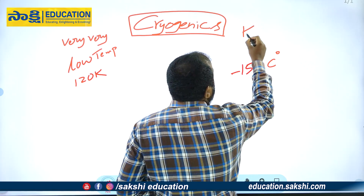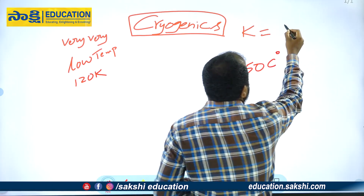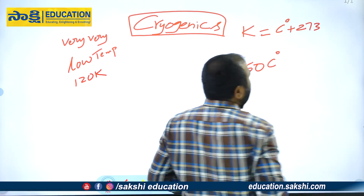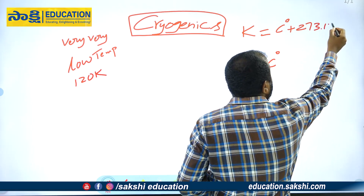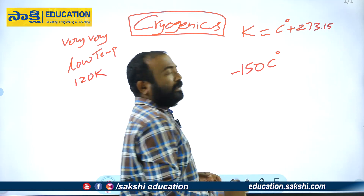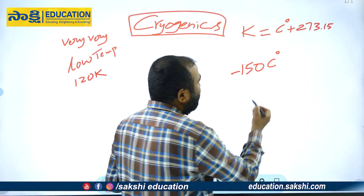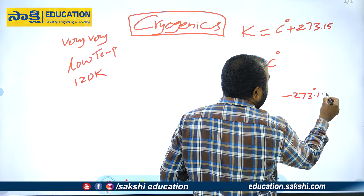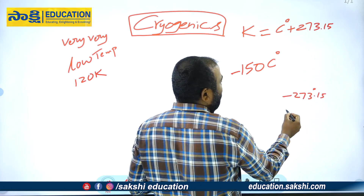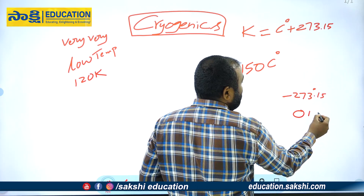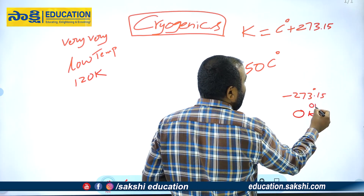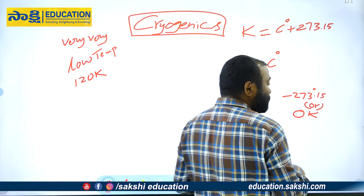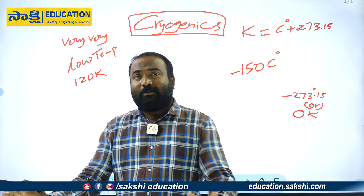In physics, we have a relationship: Kelvin is equal to Centigrade plus 273. So 0 Kelvin is equal to minus 273.15 degrees Celsius. We have absolute zero temperatures — this is absolute zero.